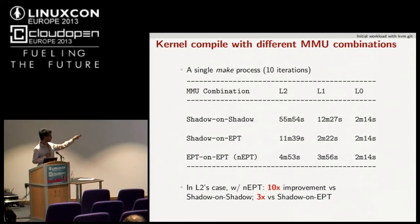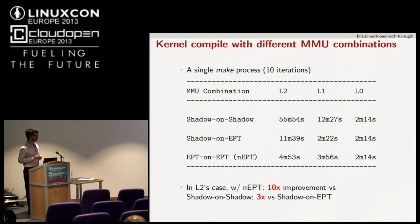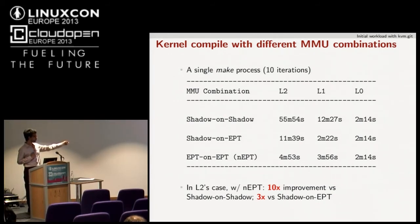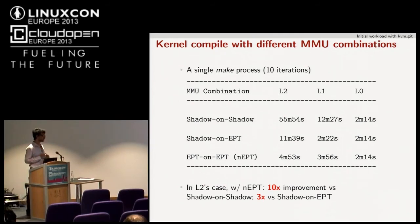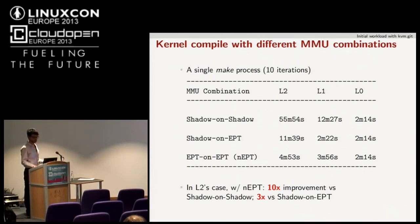All L2 guests were run with two processes, all L1 with four virtual processes, and L0 with eight. In the L2 case with shadow on top and nested EPT on the bottom, you can see almost ten times — a thousand percent — improvement in kernel compilation. With make -j2, shadow on EPT was around 19 minutes, while EPT on EPT was about 8 minutes 30 seconds.